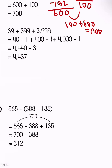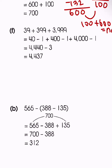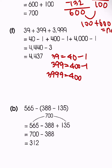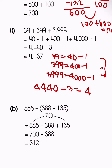For numbers like 39, 399, and 3,999, we can think of 39 as 40 minus 1; 399 as 400 minus 1; and 3,999 as 4,000 minus 1. When we add those together, it's going to be 4,440 minus 3, which gives us 4,437.